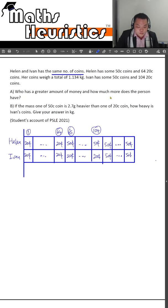Who had a greater amount of money and how much more does the person have? So to deal with this, if we observe where the differences arise, it comes mainly from this portion. Agree? So how many more coins does Helen have than Ivan? That would be 104 minus 64 to give you 40.